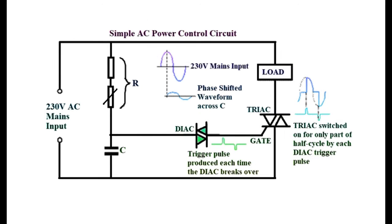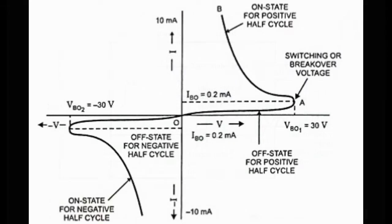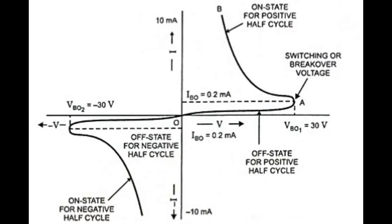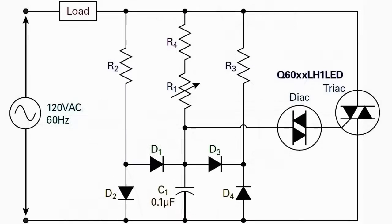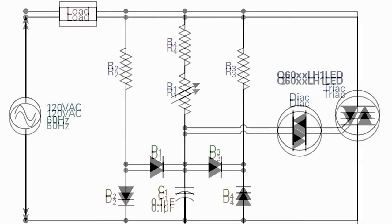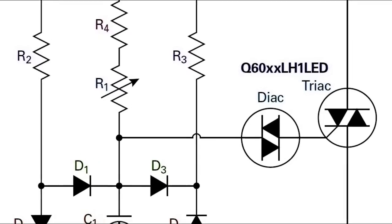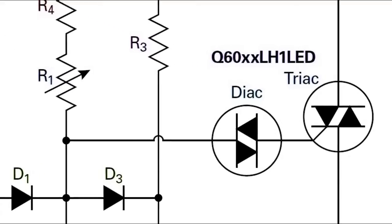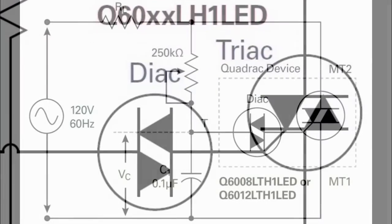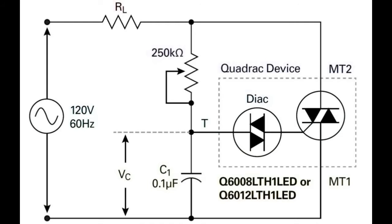The DIAC is a very useful component used to trigger triacs. Due to its negative resistance characteristic, it turns on quickly when the applied voltage reaches a certain level. If we want to use a triac to control alternating current, a separate DIAC is needed. Fortunately, it is sometimes possible to replace a separate DIAC and triac with a single switching component called a Quadrac.